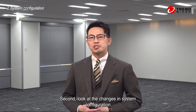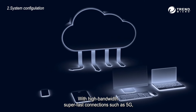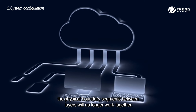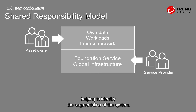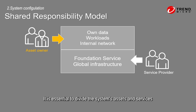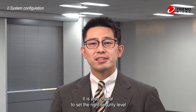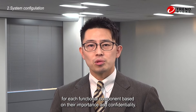Second, look at the changes in the system configuration. With high-bandwidth, super-fast connections such as 5G, as apps and data processing move to the cloud and the edge, the physical boundary segments between layers will no longer work together. The shared responsibility model is generally defined for public cloud, helping to identify the segmentation of the system. It is essential to divide the system's assets and services into functional business components rather than layers like the network and cloud. It is also crucial to set the right security level for each functional component based on their importance and confidentiality.